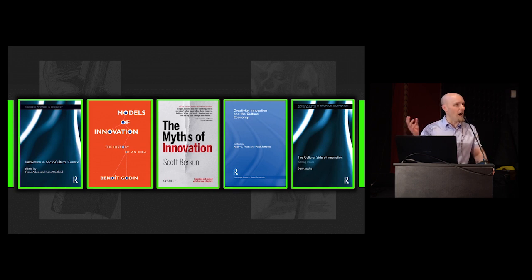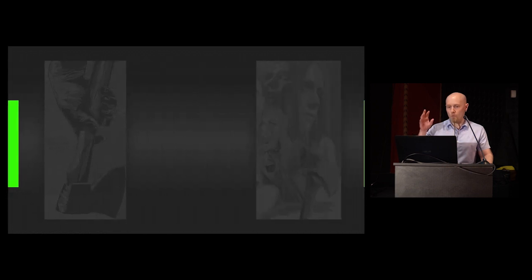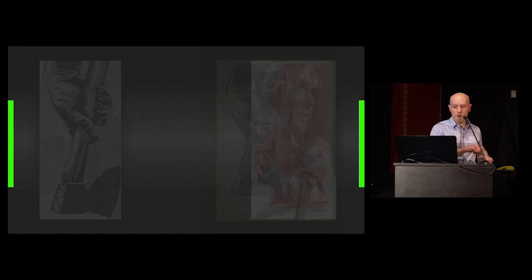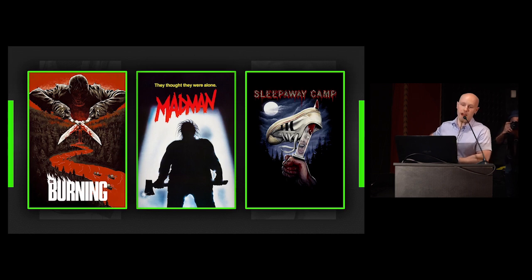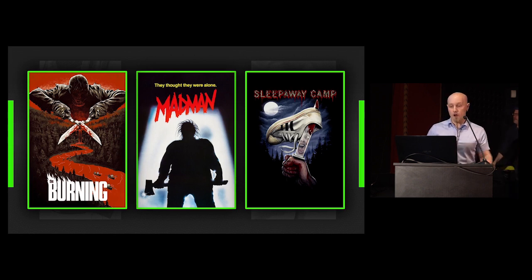In the examples I'm going to be looking at, I'm focusing on how subtraction can be used as a form of innovation. I'll begin with an example to illustrate what I mean: I Didn't Come Here to Die. Both examples I'll use today begin with very generic setups. I Didn't Come Here to Die is a horror film based around a summer camp, featuring teenagers who arrive to build a camp for underprivileged youths.